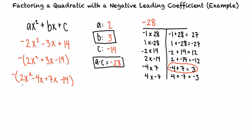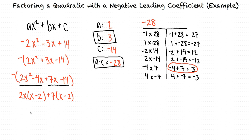For our next step, we want to look at these two terms grouped together and these two terms grouped together, and determine their common factors. 2x squared and negative 4x have a common factor of 2x, so we can pull that out. And 7x and negative 14 have a common factor of 7, so we can pull that out. We need to make sure that the two quantities in parentheses are the same — we have x minus 2 in both.